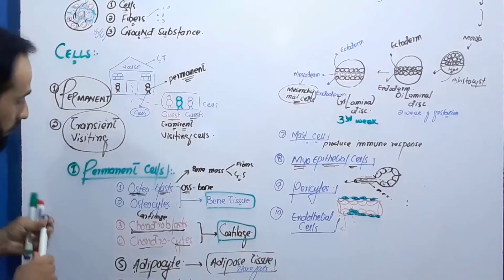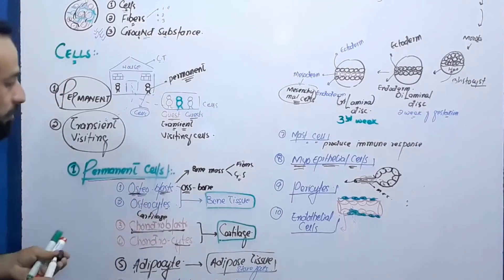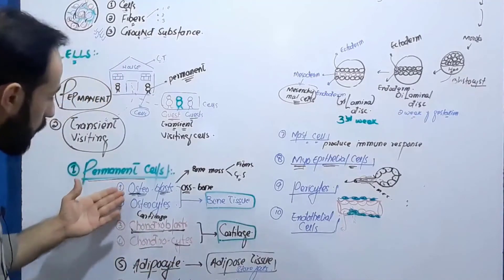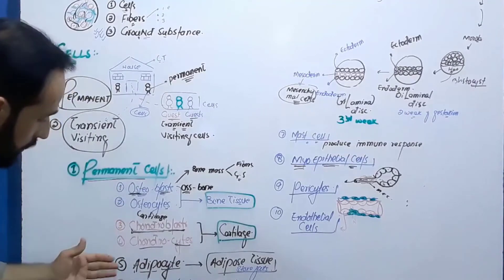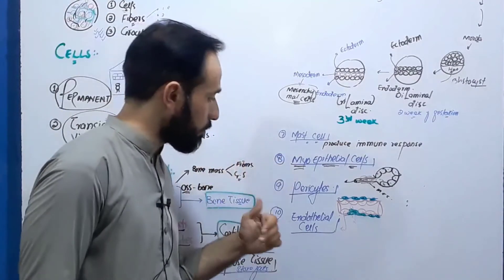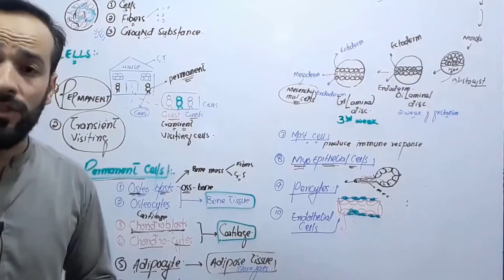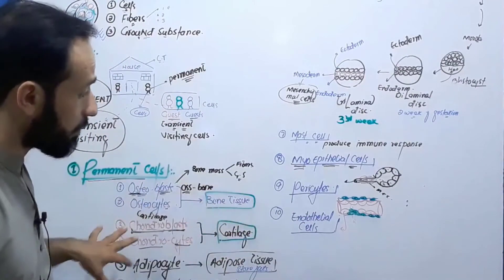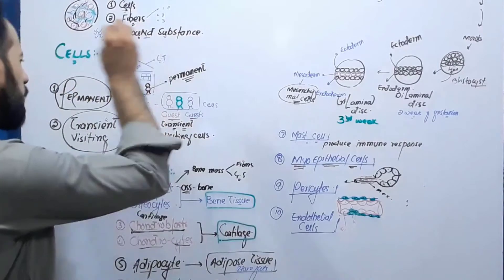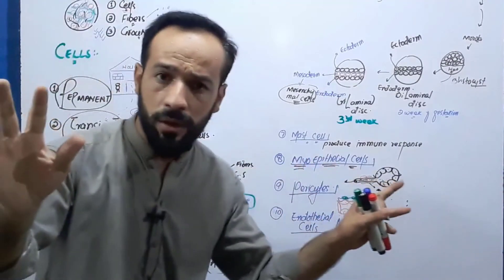So to summarize, the permanent cells of the connective tissue are: osteoblast, osteocyte, chondroblast, chondrocyte, adipocyte, odontoblast, mast cells, myoepithelial cells, pericytes, and endothelial cells. These are the cells that permanently live in the connective tissue and do not go anywhere.